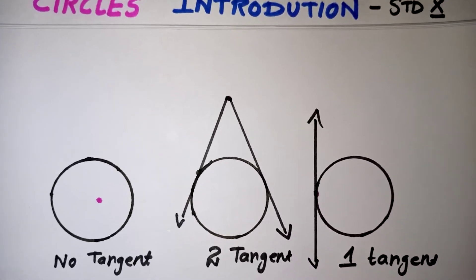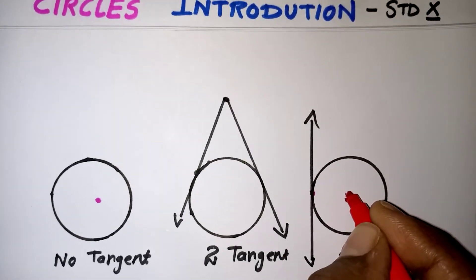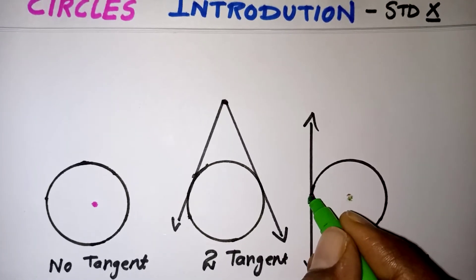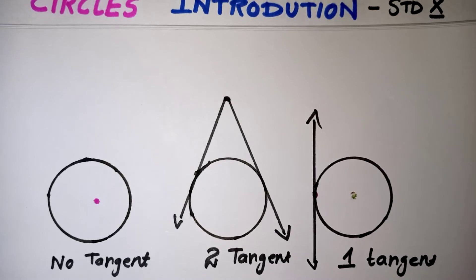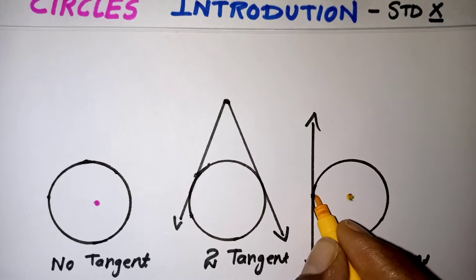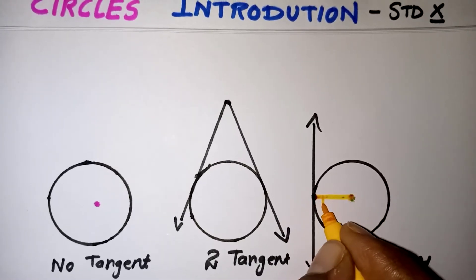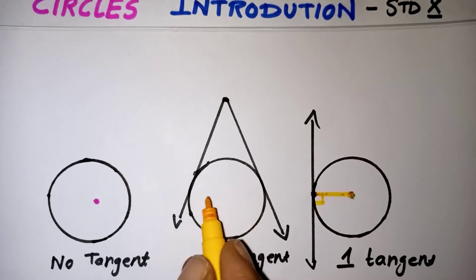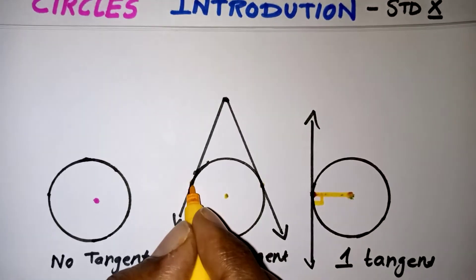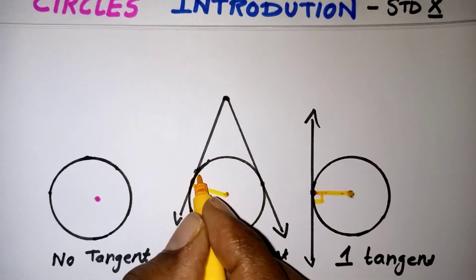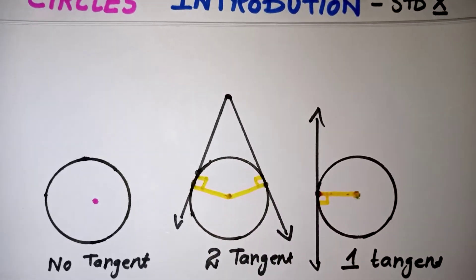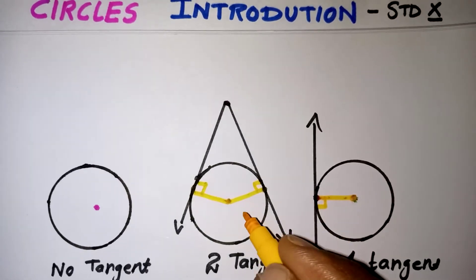One more important condition: whenever a tangent is drawn and connected with the center, the point where the tangent and circle meet is called the point of contact. If we join the point of contact to the center, that line makes a 90-degree angle with the tangent. This is true for every tangent — the radius to the point of contact is always perpendicular to the tangent, giving 90 degrees.